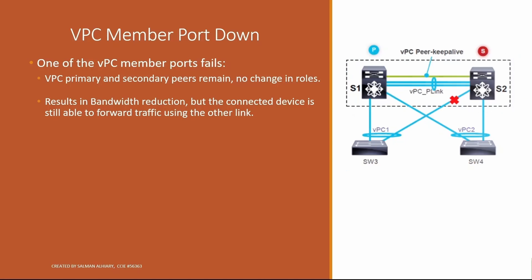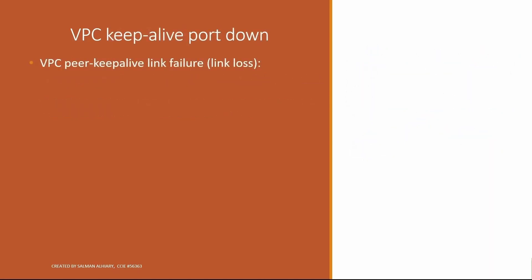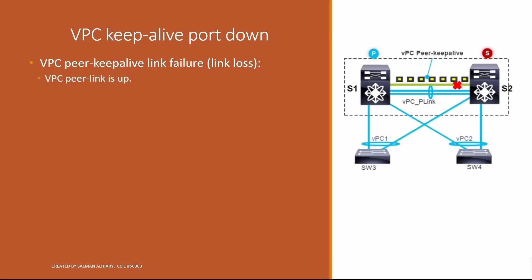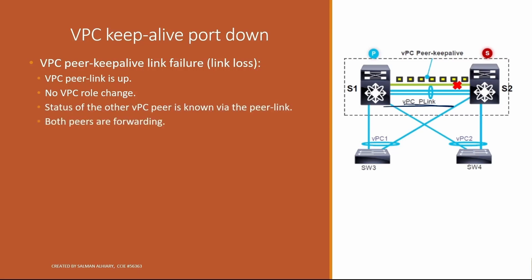When the VPC peer keep-alive port goes down but the VPC peer link is up, there is no VPC role change — primary stays primary, secondary stays secondary. The status of the other VPC peer is known by the peer link. Both peers are forwarding in active state with no downtime in the network.